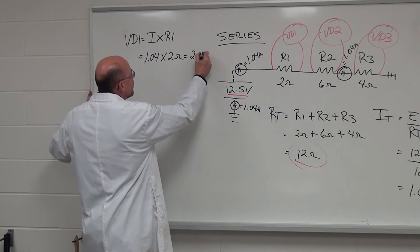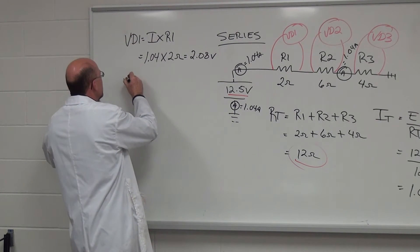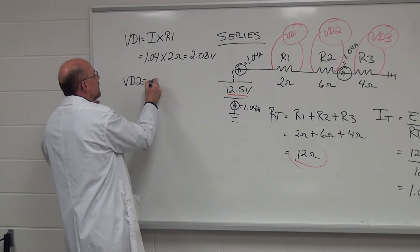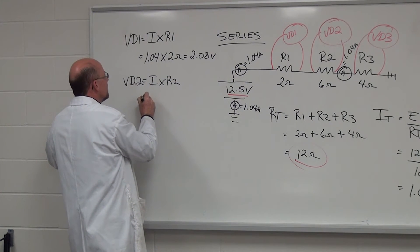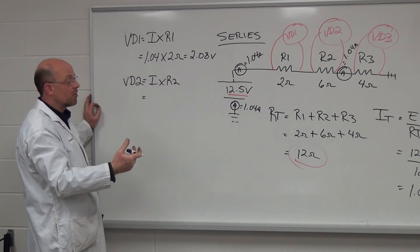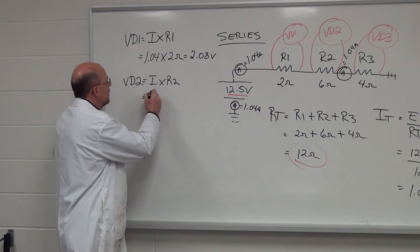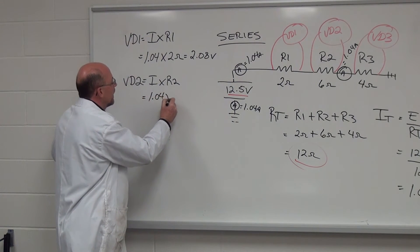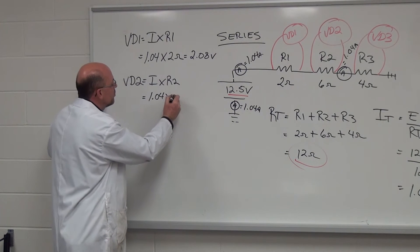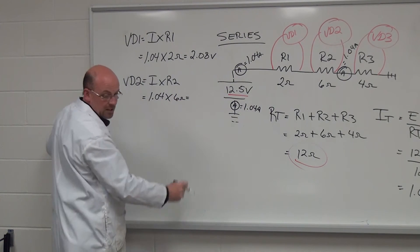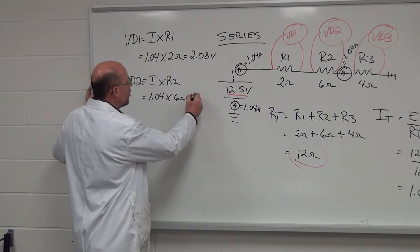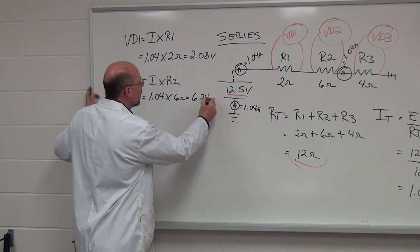And if we take a look at VD2, it's I times R2, which equals, and again we have the same amount of current flowing in a series circuit, 1.04 amps times the resistance of R2, which is 6 ohms, which equals 6.24 volts.